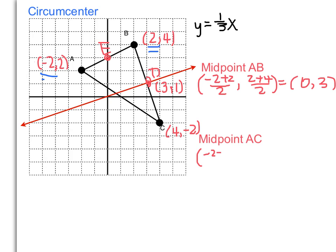That means I need to do -2 + 4 all over 2 for the x-coordinate, and 2 + -2 all over 2 for the y-coordinate. So -2 + 4 is 2 over 2, which is 1. And then we get another 0. So I have the point (1, 0), and I will call that point F.